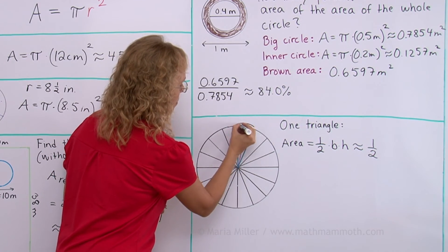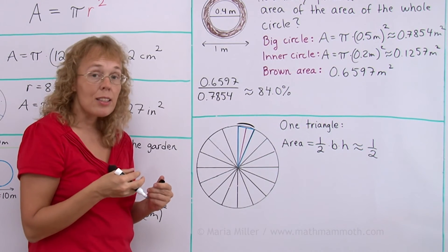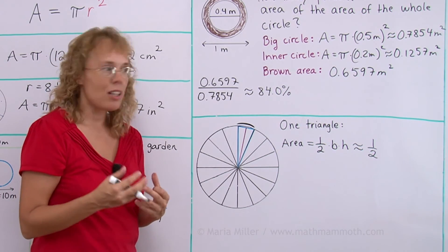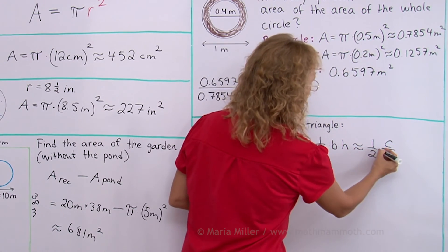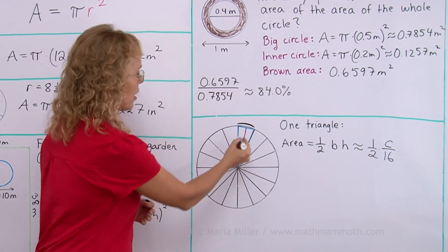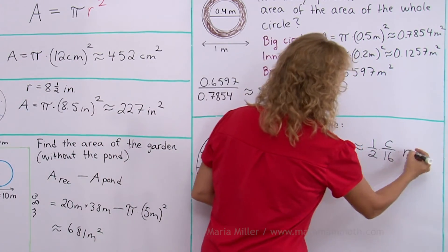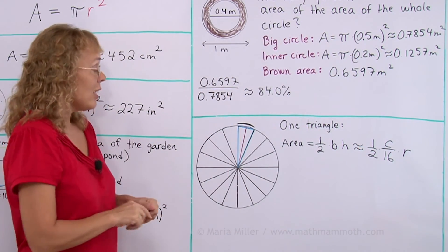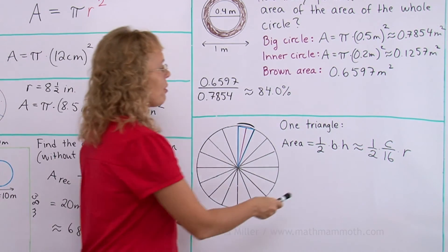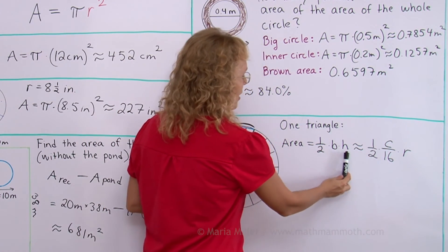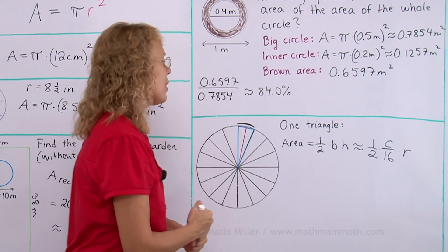And this arc of a circle here, this part here, this arc of a circle is exactly 1/16th part of the circumference. So it is circumference divided by 16. And then the height of the triangle is very close to the radius of this circle. It's not quite, but it's close. And if I had drawn many more triangles, it would be closer yet. Both of these, this base and height, they would both get closer to these quantities here.